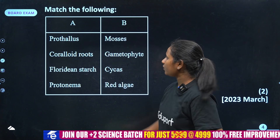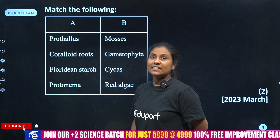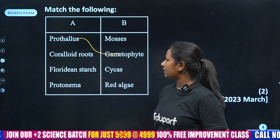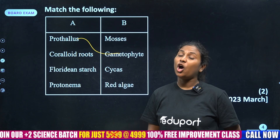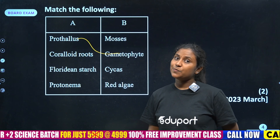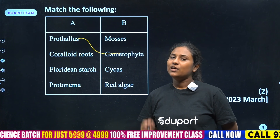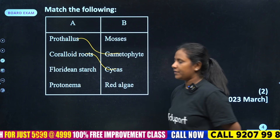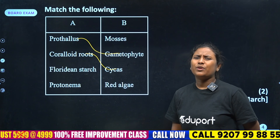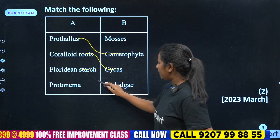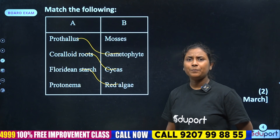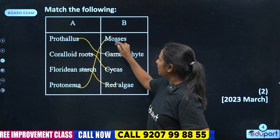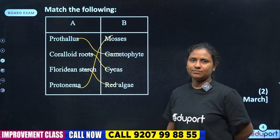Two marks. Prothallus is the gametophyte of Pteridophyte. Coraloid root in Gymnosperms is called Cycas. The root is associated with cyanobacteria — this is Cycas. Floridian Starch is the stored food in Red Algae. Protonema is the stage in Mosses — Bryophyte protonema stage. Simple.